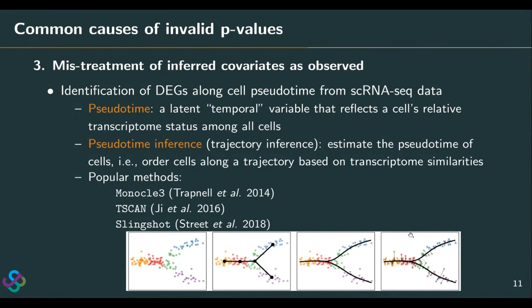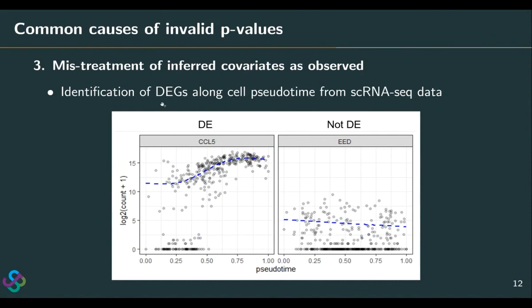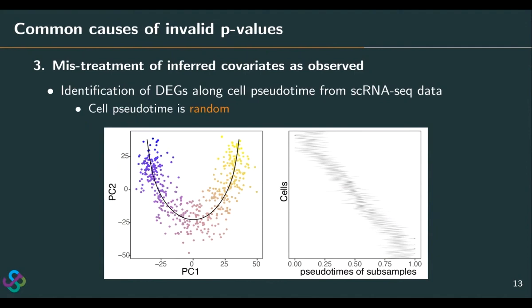After pseudotime inference, we often want to identify genes whose expression changes along the pseudotime. Like here on the left-hand side, CCL5 looks like a DE gene, while the EED gene on the right doesn't. But pseudotime DE gene identification needs to consider an important fact: cell pseudotime is not an observed covariate — it is inferred from the same data we are going to use for DE inference. On the right-hand side, for cells along the trajectory, if we perform subsampling of cells and redo the pseudotime inference in each subsample, we can see that for each cell, it has a distribution of pseudotime across the subsamples.